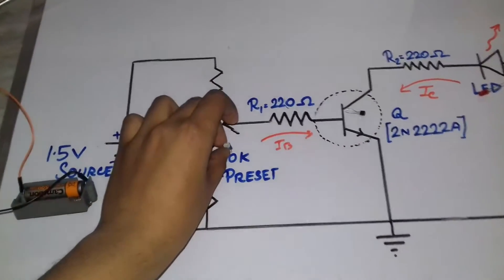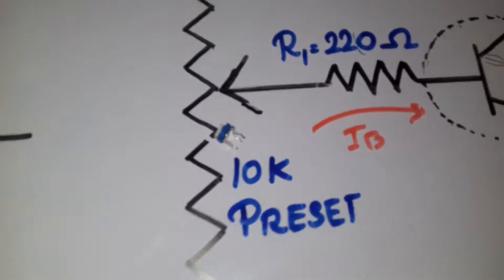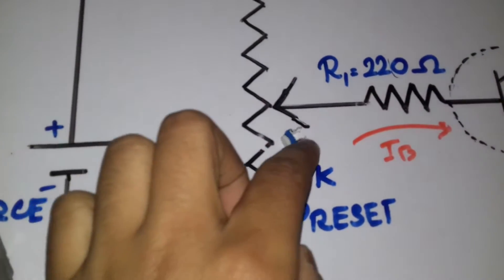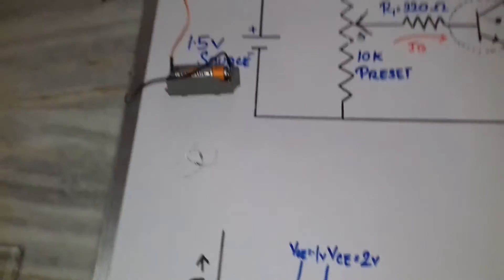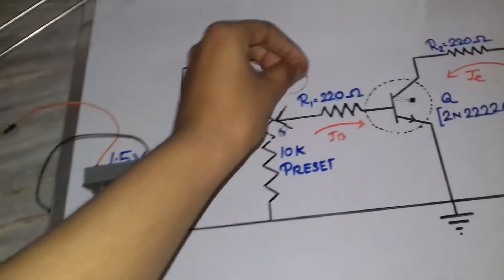A preset. Actually, it is a variable resistor. This one. I will vary this resistor to control the LED. And these are the fixed resistances. One here. And the other there.